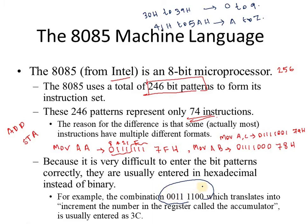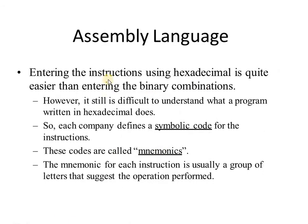To convert 00111100 to hexadecimal: 2+1=3 and 8+4=12, which is C, giving 3C. It is much easier to remember 3C than the full binary pattern. Entering instructions using hexadecimal is quite easier than entering the binary combination. However, it is still difficult to understand what a program written in hexadecimal code means.